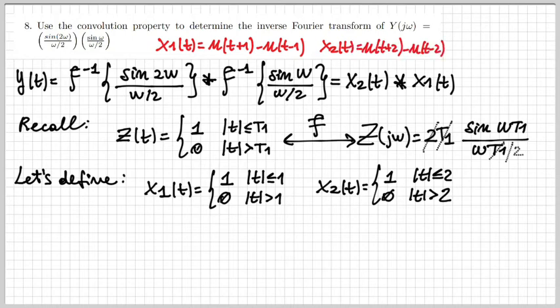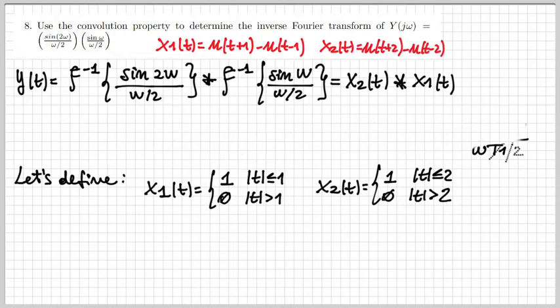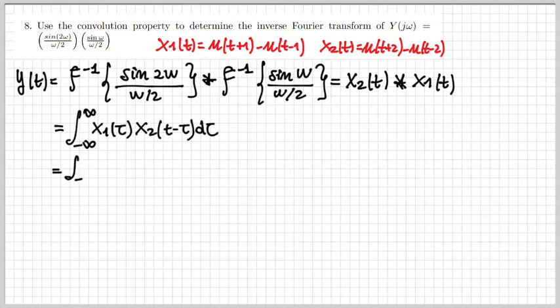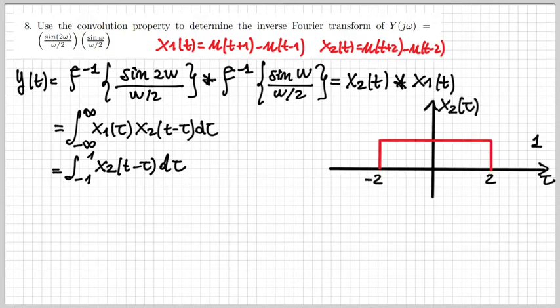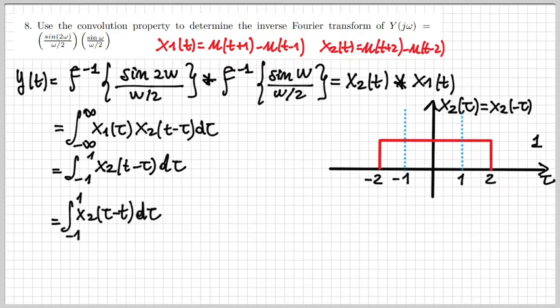I write down in red the expressions for x₁(t) and x₂(t) and now we can work out the convolution between them. Using the definition of the convolution integral, and noting that x₁ only runs between -1 and 1, I get this integral. I solve it graphically by drawing the signals. Since x₂ is an even signal, x₂(τ) equals x₂(-τ), so I can rewrite the integral as the integral of x₂(τ - t). The variable is τ, and t is just a shift parameter.